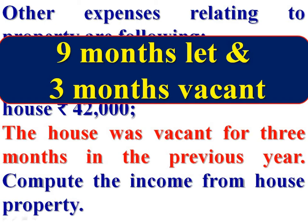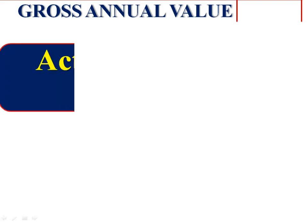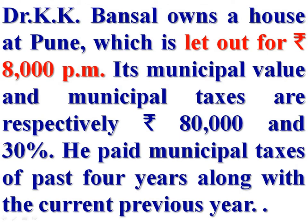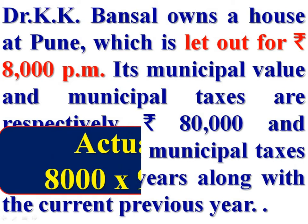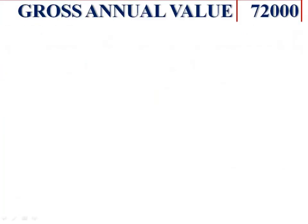Now we are computing income from house property. First, compute gross annual value. If a let-out property remains vacant during the previous year, there is no need to compute expected rental value. The actual rent received or receivable is the gross annual value. The property was let out for 9 months at Rs 8,000 per month. Therefore, actual rent is Rs 8,000 × 9 = Rs 72,000. This Rs 72,000 is the gross annual value.